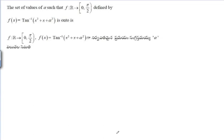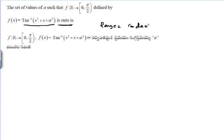Find the set of values of alpha such that f maps R to the closed interval [0, π/2). The function is defined by f(x) = tan⁻¹(x² + x + α²). For this to be an onto function, the range must equal the codomain, which is [0, π/2).